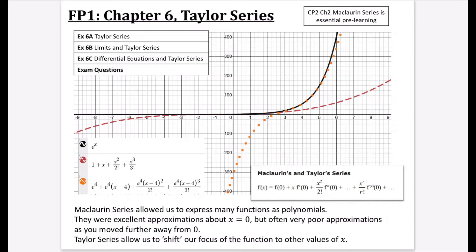The McLaurin series are excellent approximations about x equals zero — if you zoom in around that region, you can see how close the red and black lines are. But McLaurin approximations are very poor as you move further away from zero. You can see the red line is very far from the black line on both sides, and particularly at x equals four, there's a large gap.